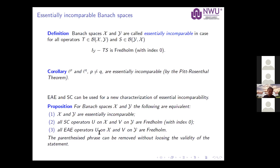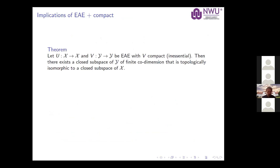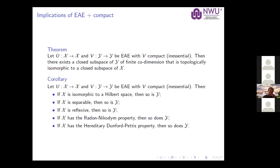We had an earlier result: if two operators are equivalent after extension and one of them is compact — or more generally inessential — then there exists a closed subspace of Y of finite co-dimension that is topologically isomorphic to a closed subspace of X. Once you have operators like that, the two Banach spaces share many properties: if X is isomorphic to a Hilbert space so is Y, and you get similar results for separability, reflexivity, the Radon-Nikodym property, and the hereditary Dunford-Pettis property.